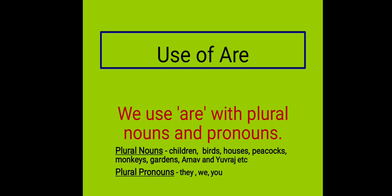Like that, birds — ek bird hogi to bird, jab many birds hoti hain toh unko birds bolte hain. Isi tarah, one house, many houses. One peacock, many peacocks. One monkey, many monkeys. One garden, many gardens. Aur Arnav and Yuvraj — I have written two names of two boys. Agar ek hi bachay ka likha hota, at that time we'll use Is. But here, I have written two boys' names, so we will use Are here.